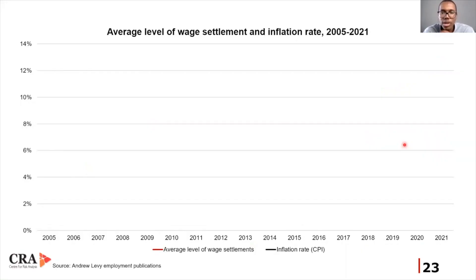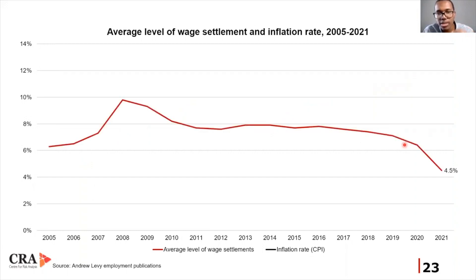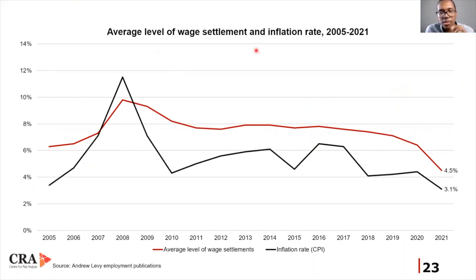As much as there is a socioeconomic consequence of the unemployment crisis in the country, what is the positive in this aspect? The positive is that businesses now have a surplus of labor they can use in the production process. But what prevents this? We gauge this by looking at the average level of wage settlement and inflation from 2005 until 2021, data we obtained from Andrew Levy's employment publications.